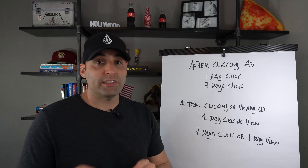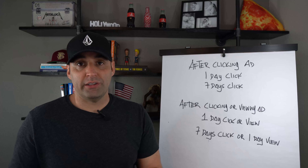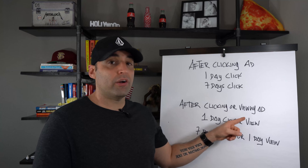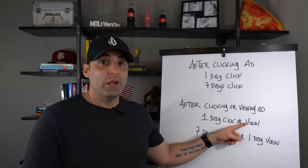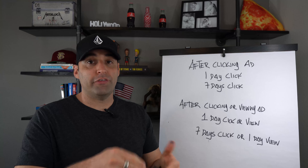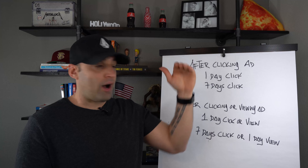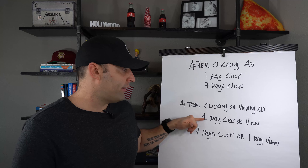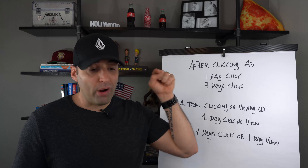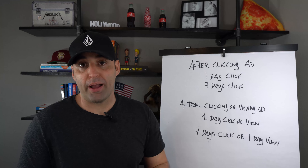Because I want to test my audiences and see if people are interested. When you choose one-day click or view, you're forcing the algorithm to try to find those impulse buyers. If you're using lowest cost as well, that combination tells the algorithm, 'Hey, I want you to find me those people right off the bat who are impulse buyers.'